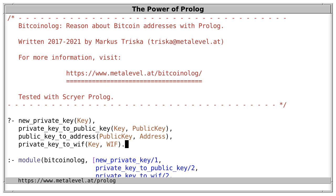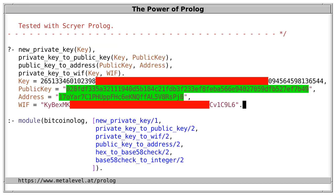We can also convert a private key to so-called wallet import format, WIF. This is a common format that many applications support, and it allows us to easily copy private keys to many other applications. Wallet import format is simply a more compact representation of private keys. I'm again hiding some parts, because showing it fully would reveal the private key we've just generated.